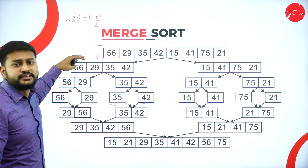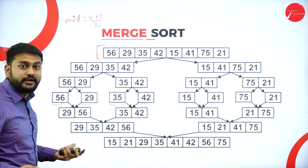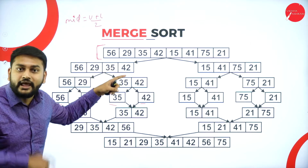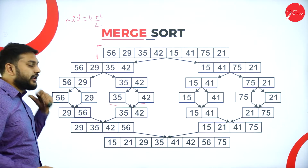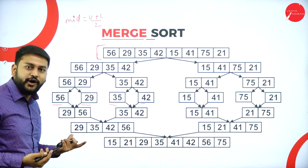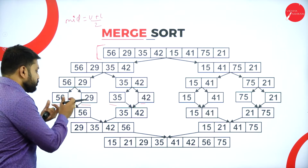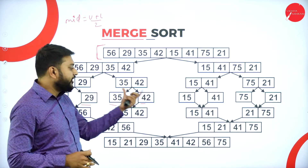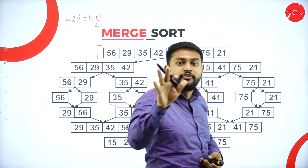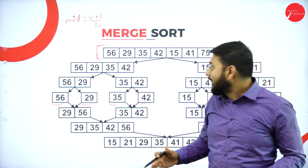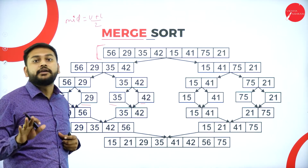Let me explain this side first and then come to the other side. For this sub-array, again I will calculate the mid value. I have four elements, so the mid gives two. So I get one separate array and another separate array. Again I calculate the mid value using upper bound and lower bound, separating the values: 56 and 29 are separated; 35 and 42 are separated. Now I have divided the array into single individual elements. That is the first part of merge sort.